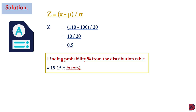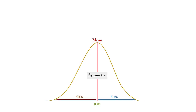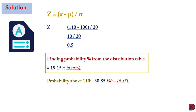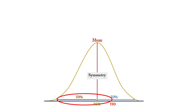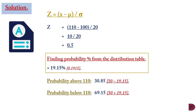0.1915 multiplied by 100 is 19.15%. Since we are looking for the probability above 110, and 110 is to the right of the mean, all options above 110 are subtracted from 50%. So the probability of being more than 110 is 30.85%. For less than 110, since 110 is to the right, all the space to the left of the mean is intact, so we add 19.15% to 50%, giving 69.15%.